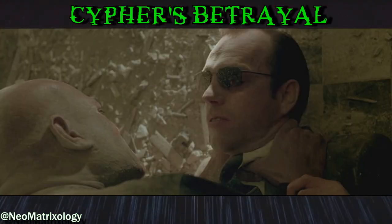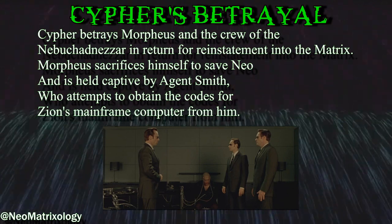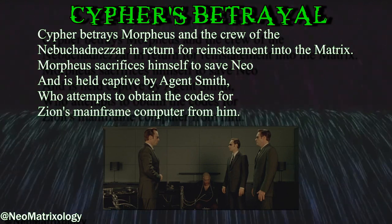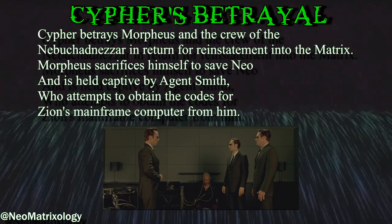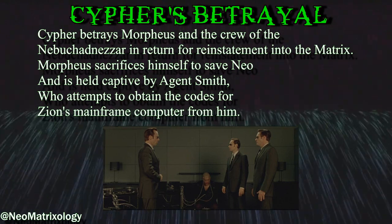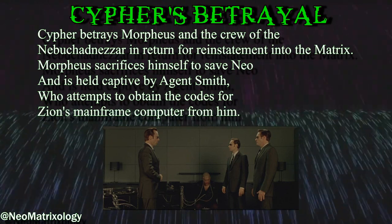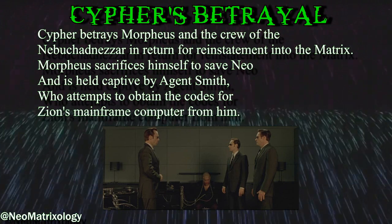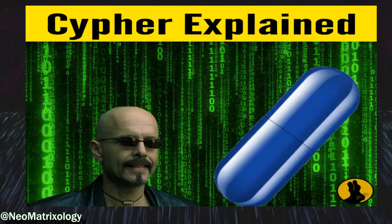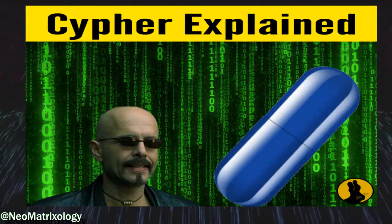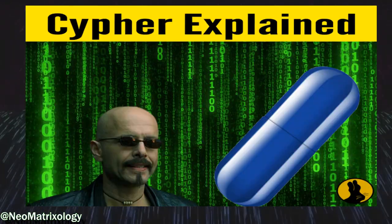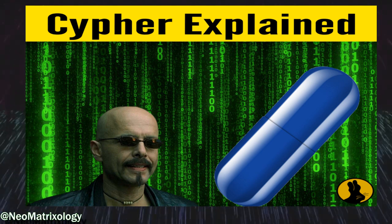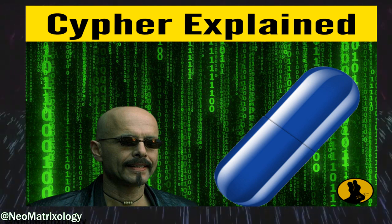Cypher's Betrayal: Cypher betrays Morpheus and the crew of the Nebuchadnezzar in return for reinstatement into the Matrix. Morpheus sacrifices himself to save Neo, and is held captive by Agent Smith, who attempts to obtain the codes for Zion's mainframe computer from him. I went into very specific details of Cypher's Betrayal in the Cypher Explained video featuring Joe Pantoliano. I'll leave a link in the description for anyone who missed it.